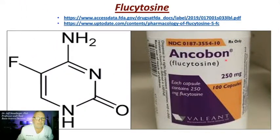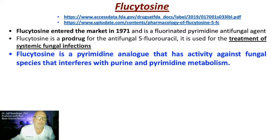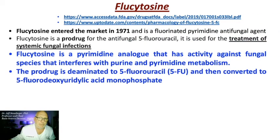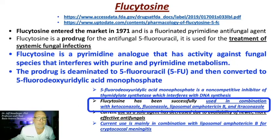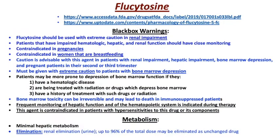Flucytosine is a pyrimidine analog with activity against fungal species that interferes with purine and pyrimidine metabolism in yeast. The prodrug is deaminated to 5-fluorouracil and then converted to 5-fluorodeoxyuridylic acid monophosphate. Its current use is mainly in combination with liposomal amphotericin B for cryptococcal meningitis. This drug carries a black box warning; use with extreme caution in patients with renal impairment. It is contraindicated in pregnancy and breastfeeding. Use extreme caution in patients with bone marrow suppression, as bone marrow toxicity can be irreversible and may lead to death in immunosuppressed patients. Elimination is renal, with up to 96% of the total dose eliminated as unchanged drug.